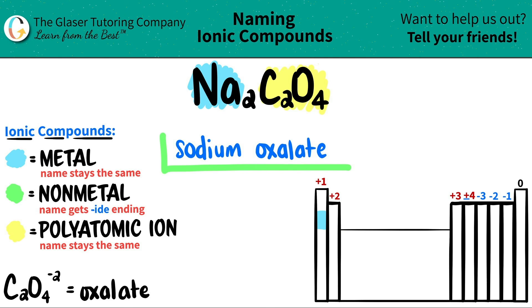So Na2C2O4 is just sodium oxalate. There you go.